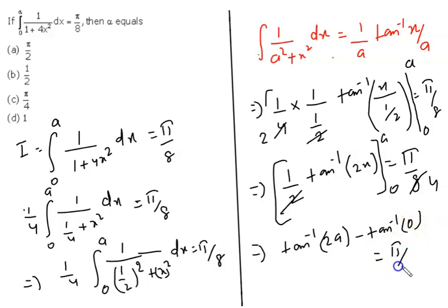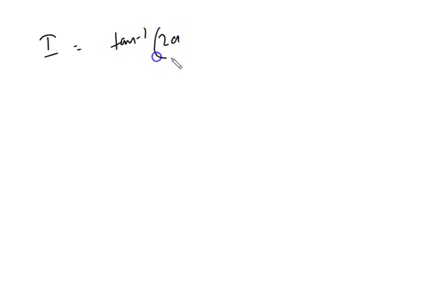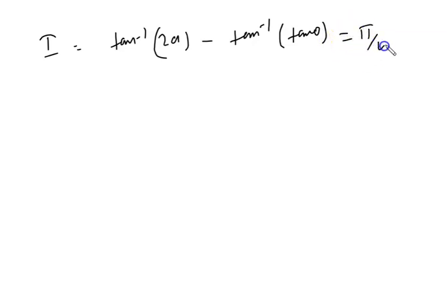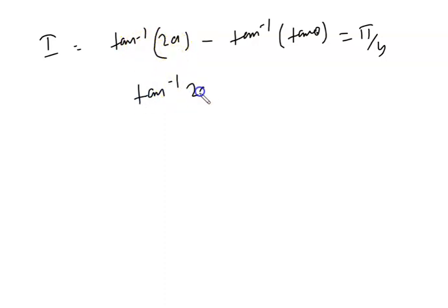So we have tan⁻¹(2a) minus tan⁻¹(0) equals π/4. We know that tan(0) equals 0, so tan⁻¹(0) equals 0. Therefore, tan⁻¹(2a) equals π/4.